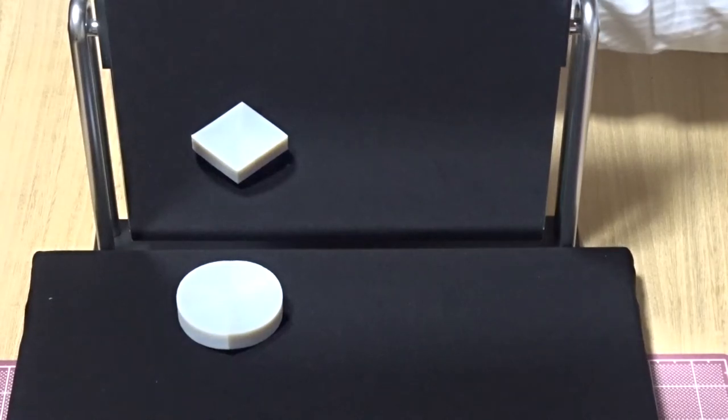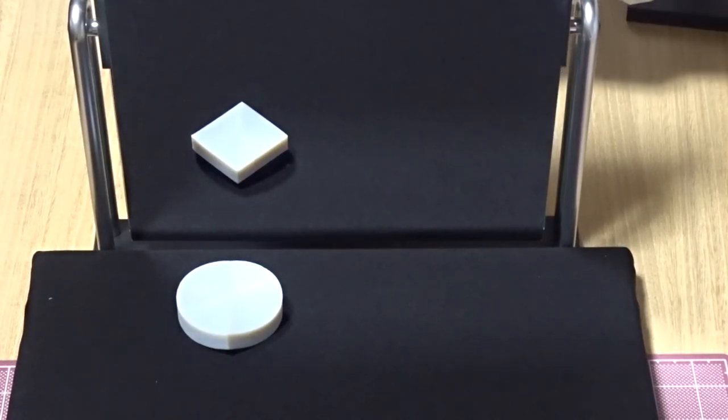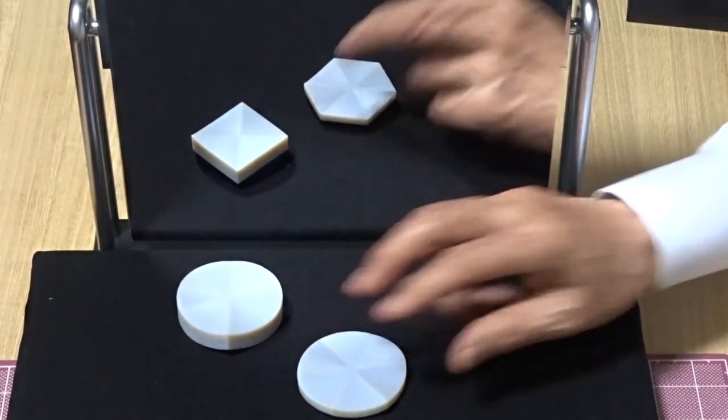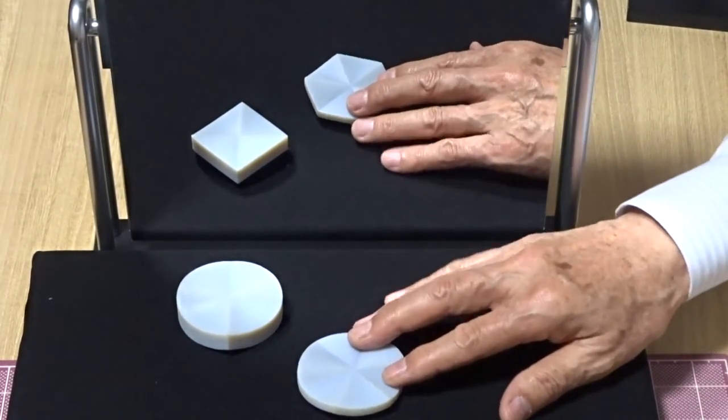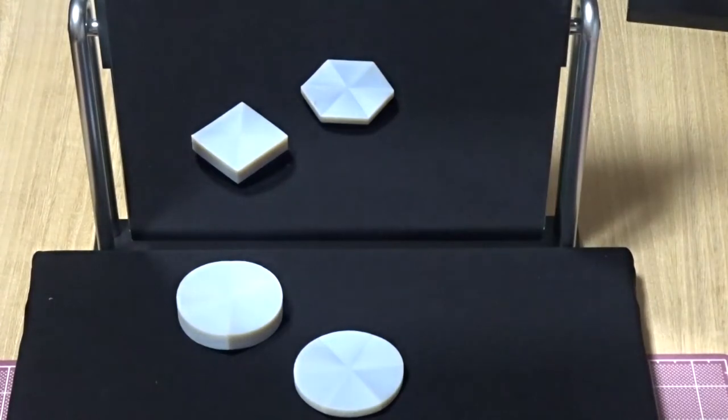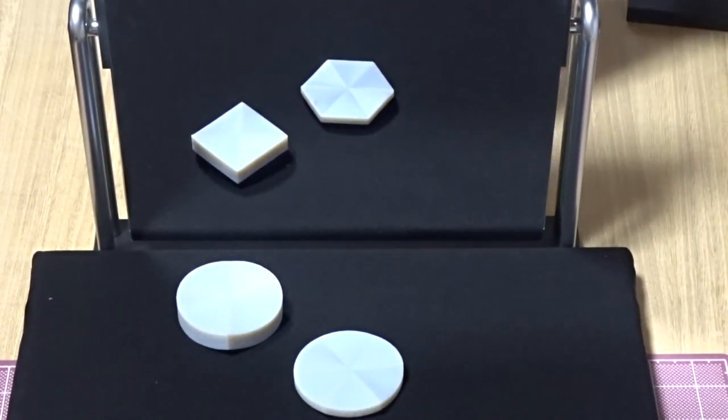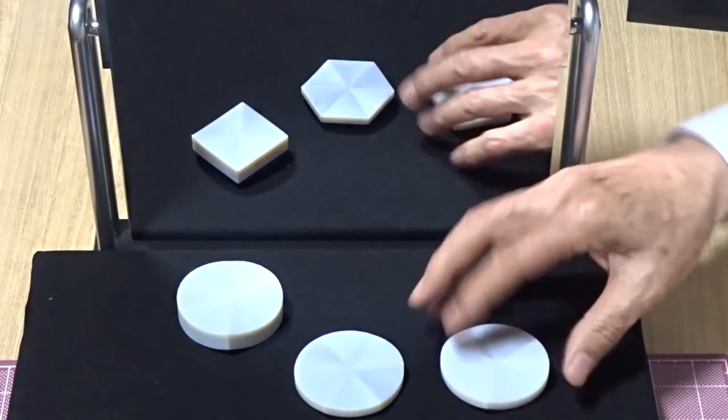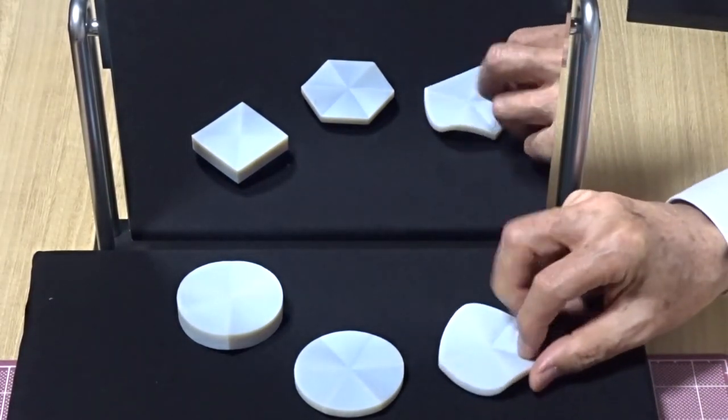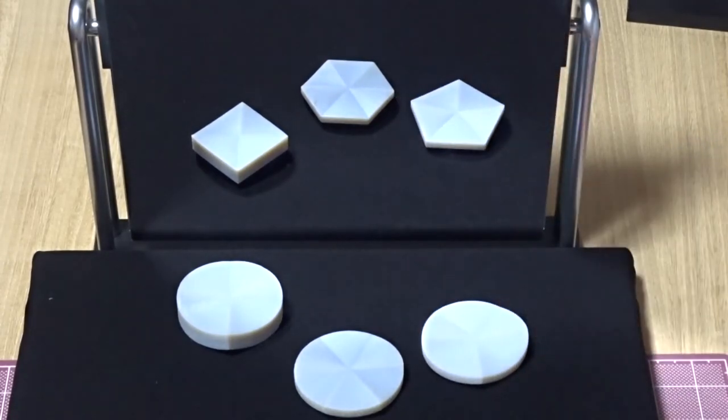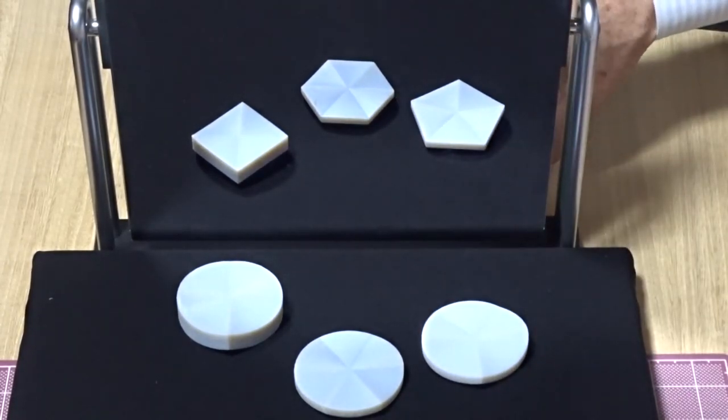We can change circles to other shapes. For example, the circle changes to a hexagon. And next, the circle changes to a pentagon. And the circle can still change to a triangle.